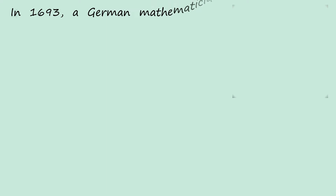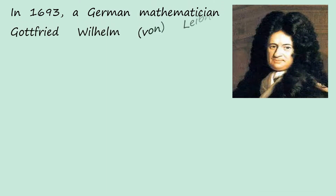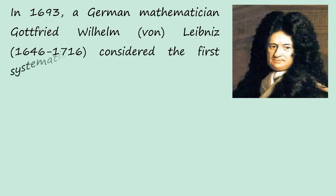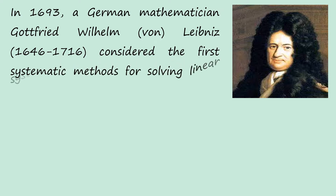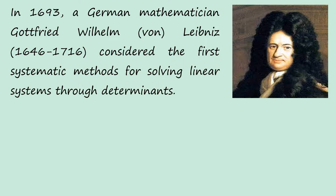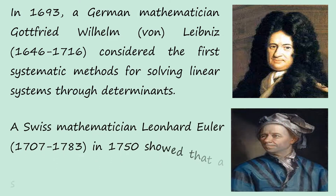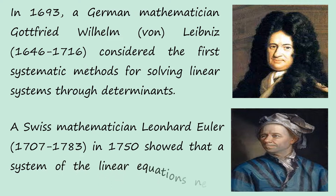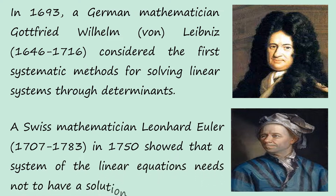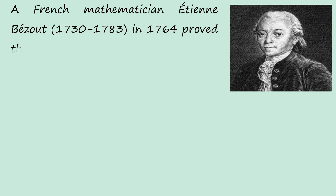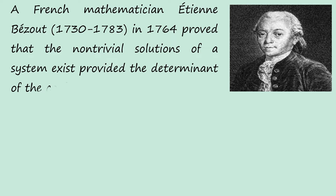In 1693, a German mathematician, Gottfried Wilhelm Leibniz, considered the first systematic methods for solving linear systems through determinants. A Swiss mathematician, Leonhard Euler, in 1750 showed that a system of linear equations need not have a solution. A French mathematician, Étienne Bézout, in 1764 proved that non-trivial solutions of a system exist provided the determinant of the coefficient matrix is zero.